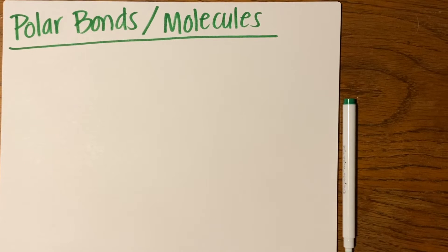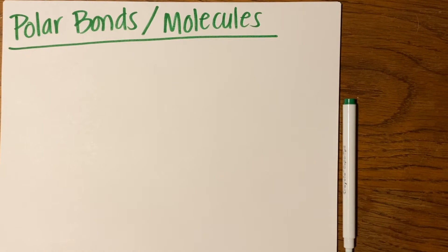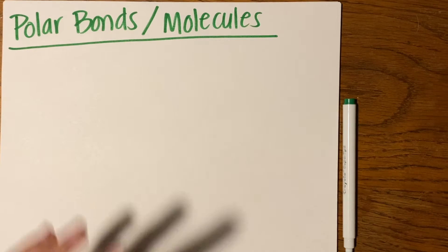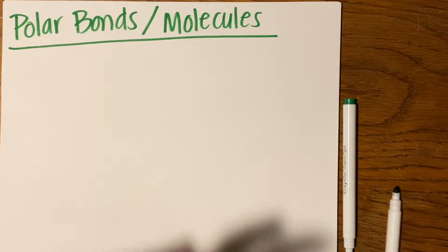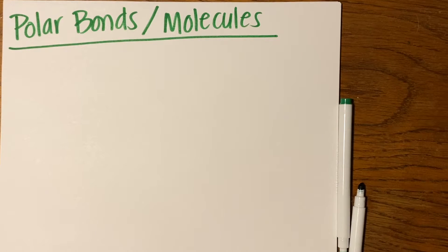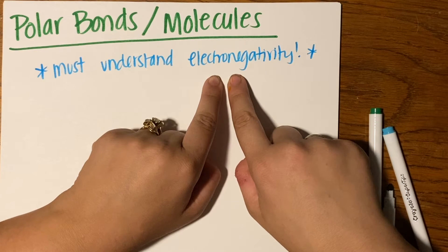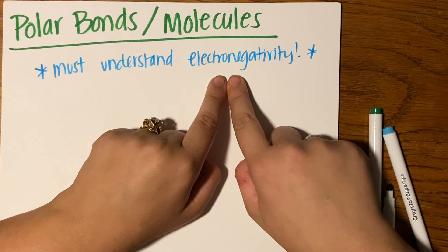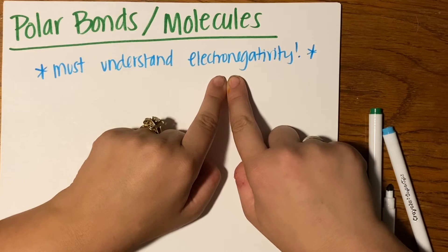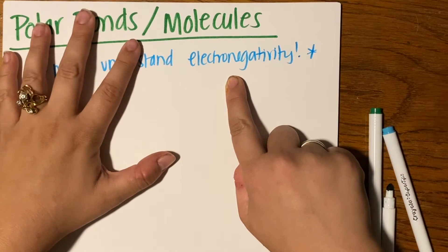In this video, we are going to be talking about polar bonds and polar molecules versus non-polar bonds and non-polar molecules. To understand this, you have to understand electronegativity first. Please make sure you understand what electronegativity is, because that will help us understand polar bonds.